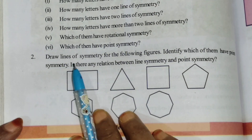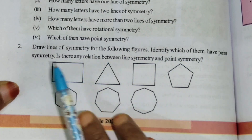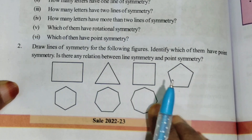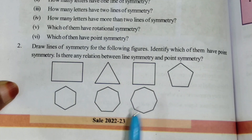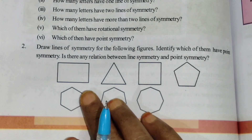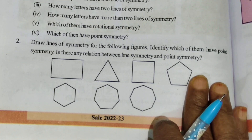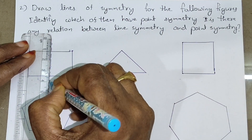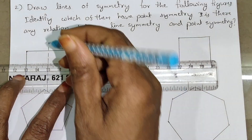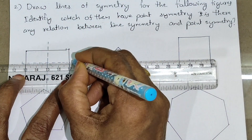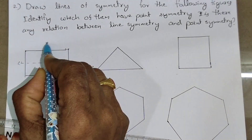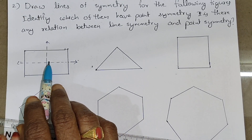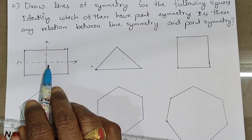Second question: draw a line of symmetry for the following figures and identify which have point symmetry. The figures given are rectangle, triangle, square, pentagon, and hexagon. For the rectangle, we draw two symmetric lines — one vertical line and one horizontal line. These are the symmetric lines of the rectangle, with both line symmetry and rotational symmetry.